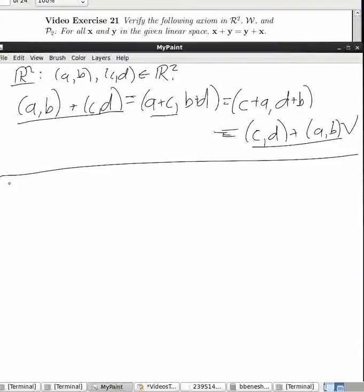In W, remember that addition is multiplication. So if I have A plus B in this—in the weird, W's for weird—that's really equal to A times B in our usual number system.